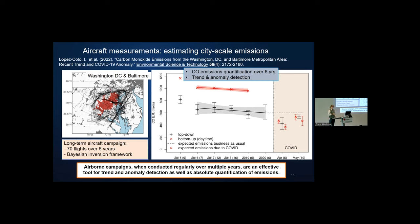The red blobs are defined by the U.S. Census. He took 70 flights over six years, and did a Bayesian inversion framework. He found a decreasing trend over those six years in CO, and he was able to attribute this to improvements in vehicular vehicles. He was also able to detect anomalies due to COVID policies when people stopped driving. Air campaigns, when conducted regularly over multiple years, are a really effective tool for trend and anomaly detection.